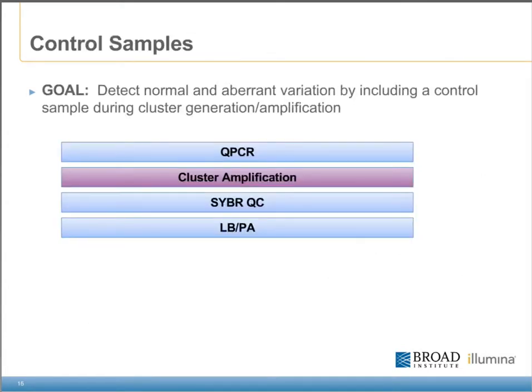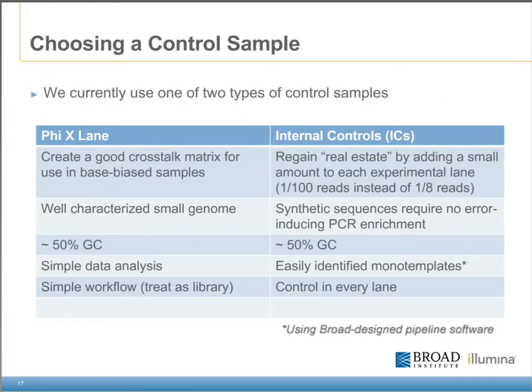Next, I want to discuss some of the flow cell control samples that we add at cluster amplification and how we can use them to detect variations in the process. We currently use two types of control samples, determined by the other samples being sequenced on the flow cell. When we run base-bias samples on a flow cell, we typically run a PhiX in lane four. PhiX is a well-characterized small genome that is about 50% GC, and since it is a regular library, it follows the same workflow as any other sample being loaded onto the flow cell. We also use a set of novel internal controls on all of our flow cells, adding a small amount of internal control sample into every lane alongside the experimental library. On most flow cells, we skip the PhiX control lane, using the internal controls instead.